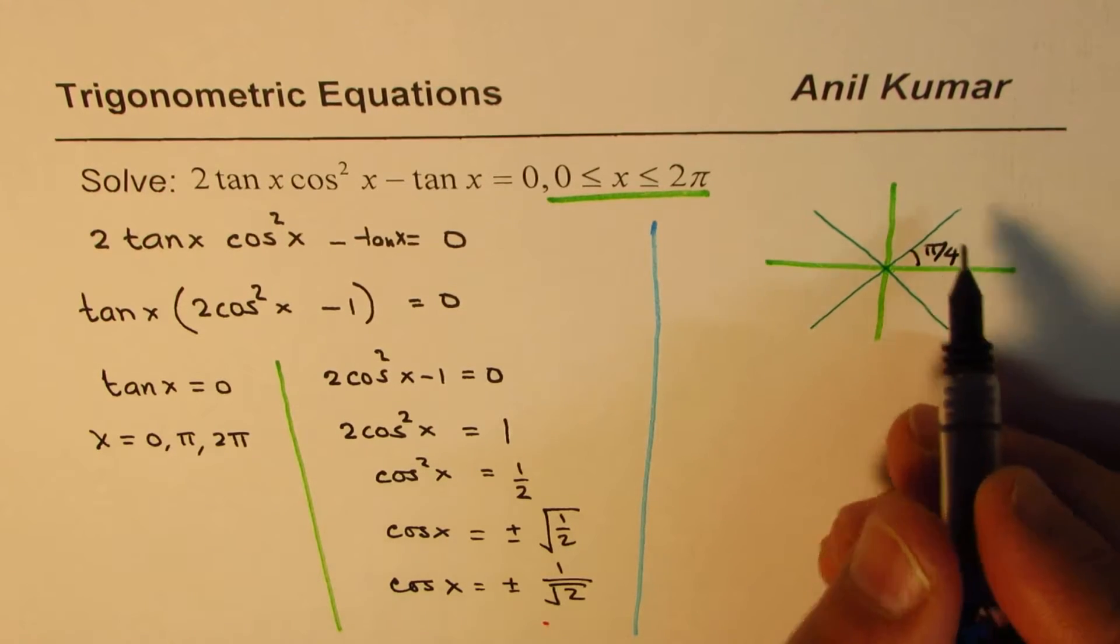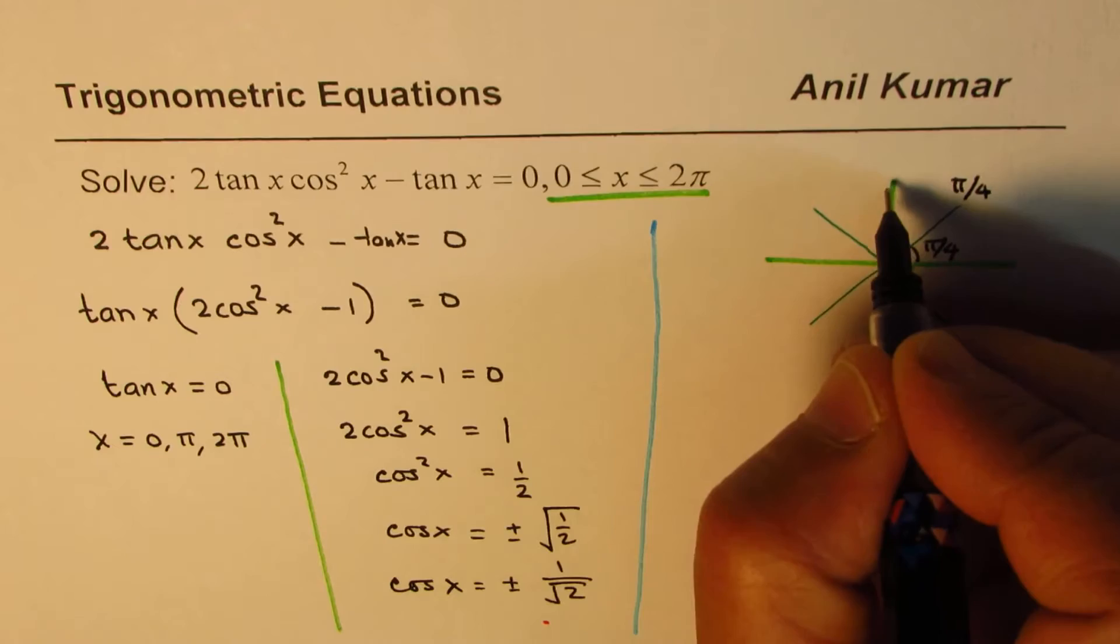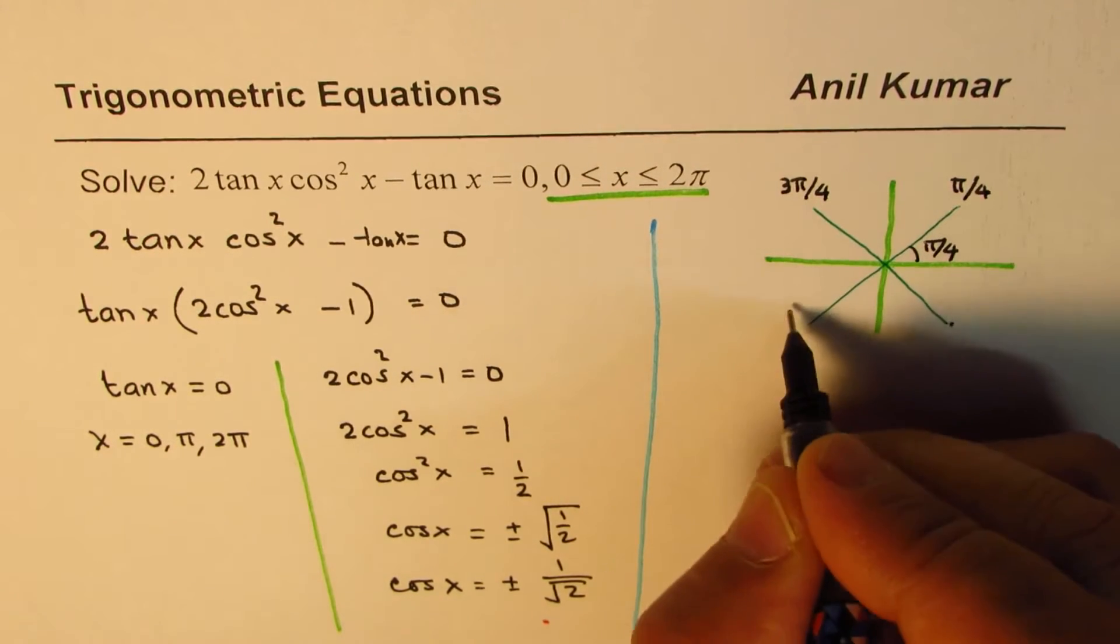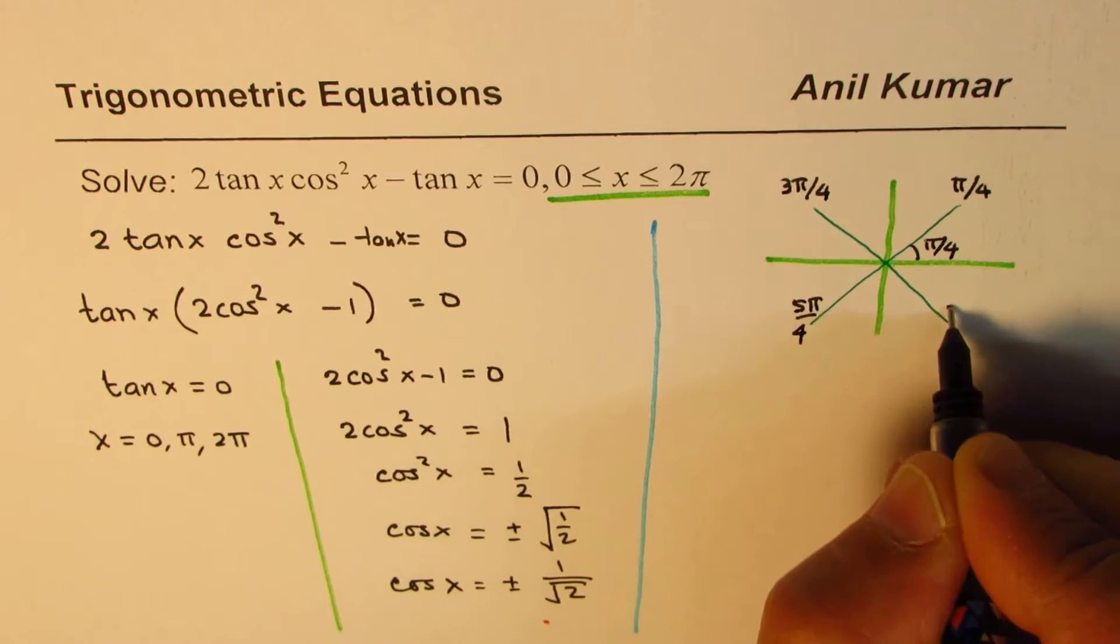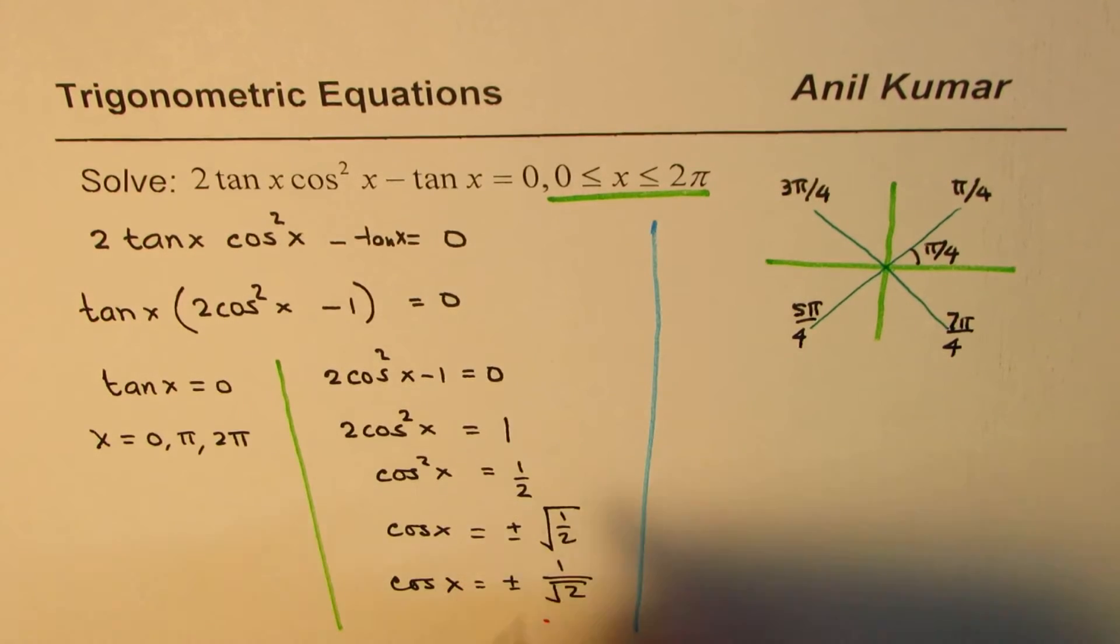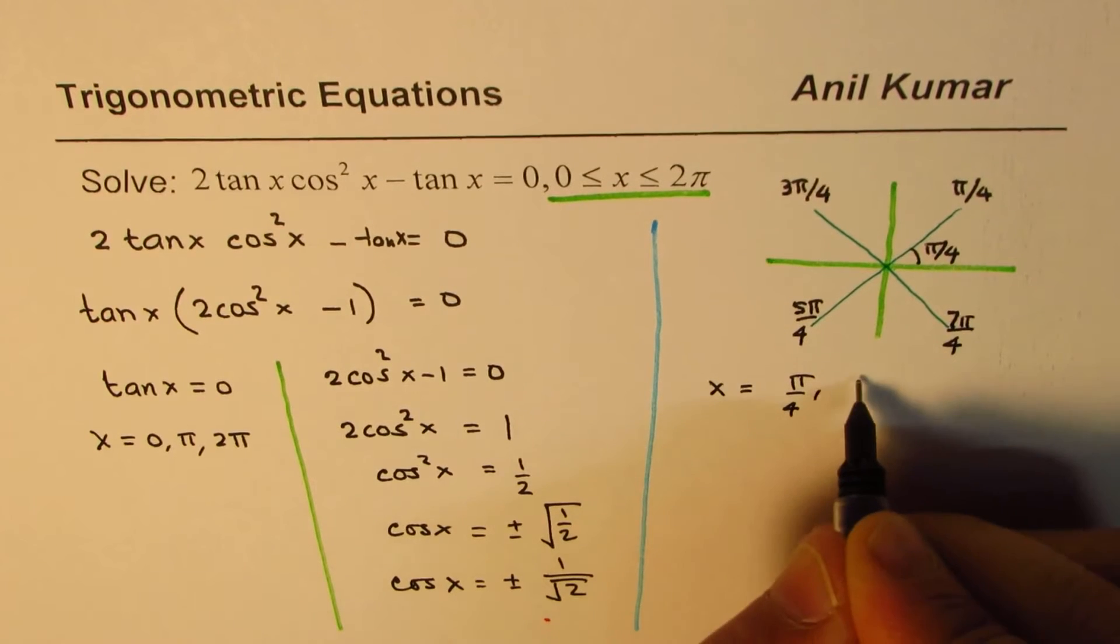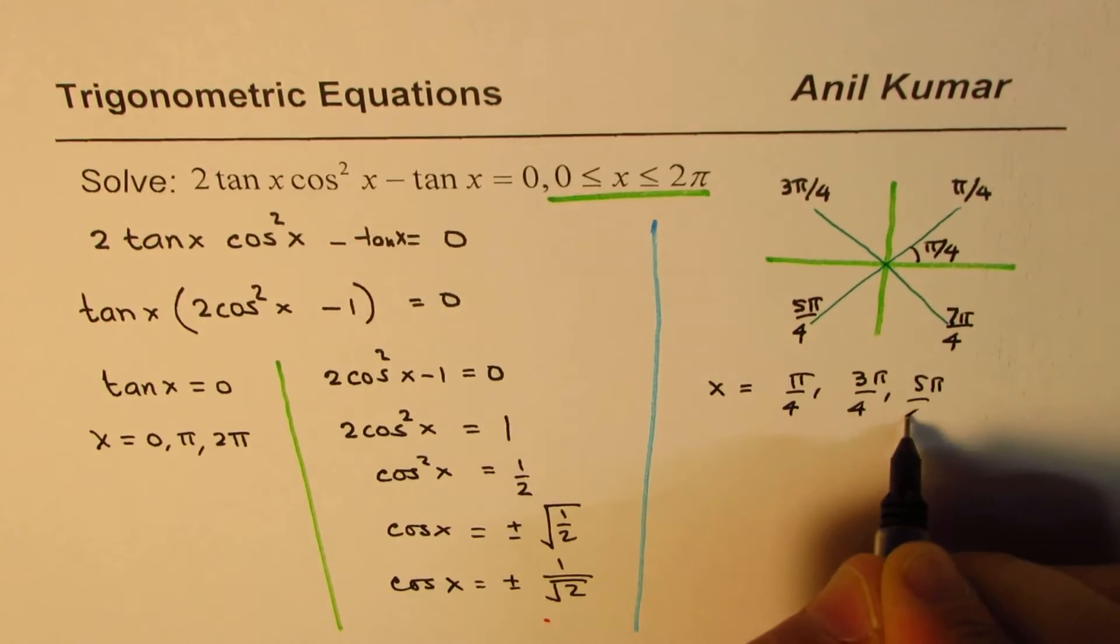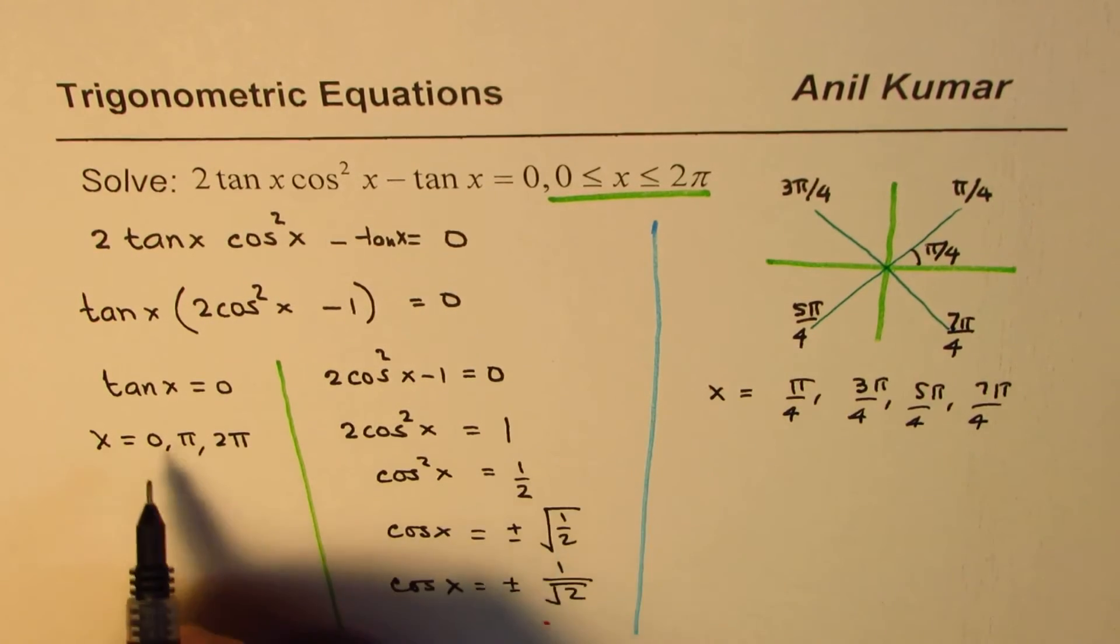So the angles are π/4, 2π/4, 3π/4, 4π/4, 5π/4, 6π/4, 7π/4. In this case we get x equals π/4, 3π/4, 5π/4, and 7π/4. So we get four solutions.